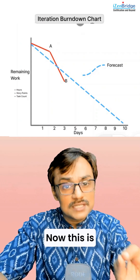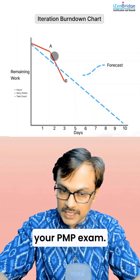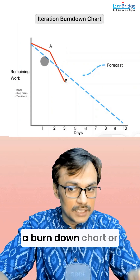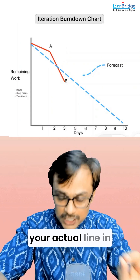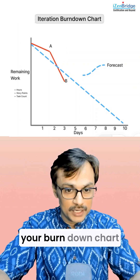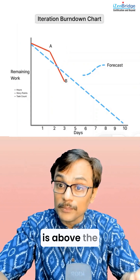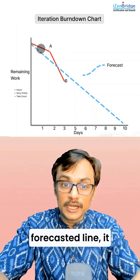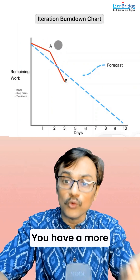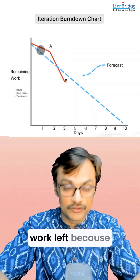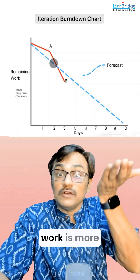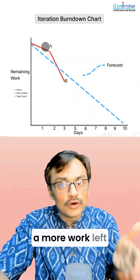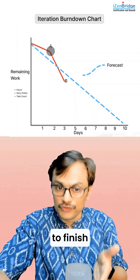This is an important concept for your PMP exam. When the actual line in a burndown chart is above the forecasted line, it means you are going slow. You have more work remaining because your remaining work is higher than expected. So you have more work left to finish.